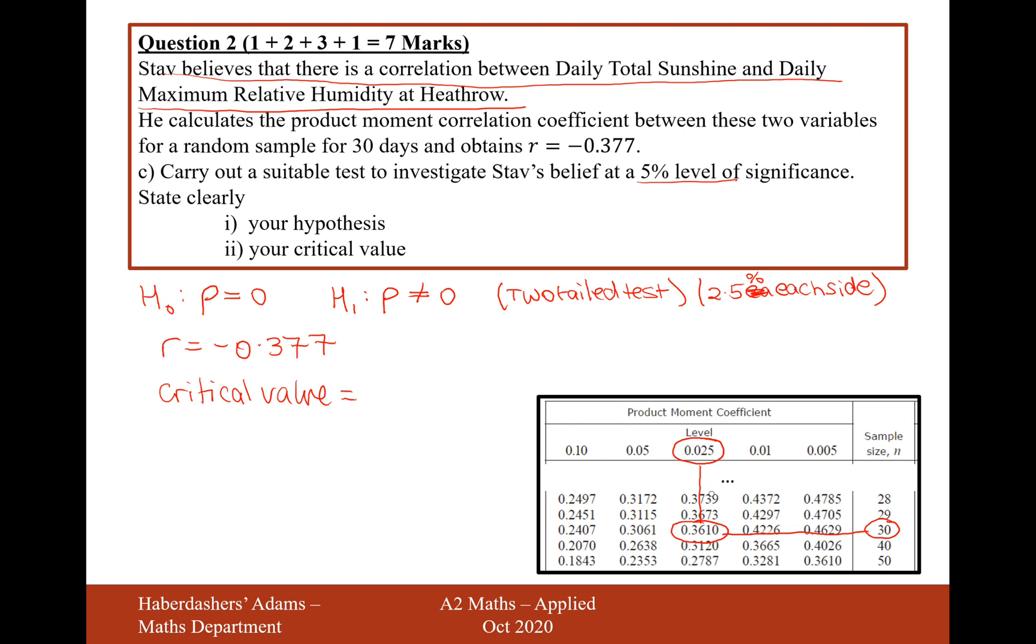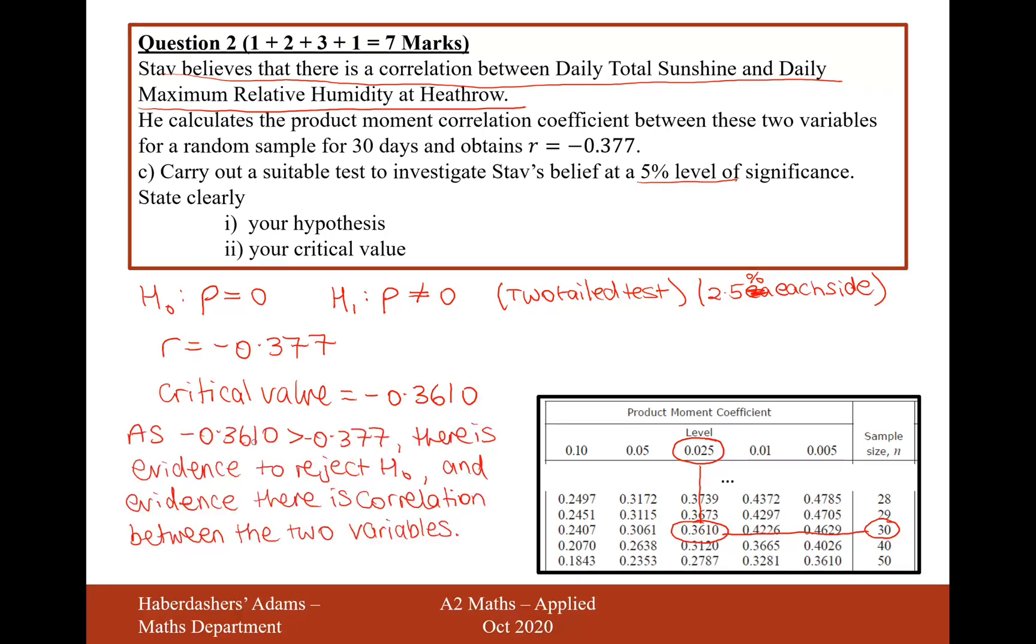Now, that's both positive and negative. It will be this value for positive correlation and the negative of this value for negative correlation. So actually, we're going to have minus 0.3610. So therefore, as the critical value is more than the PMCC, or the PMCC is less than the critical value, there is evidence to reject H0, and evidence there is correlation between the two variables.